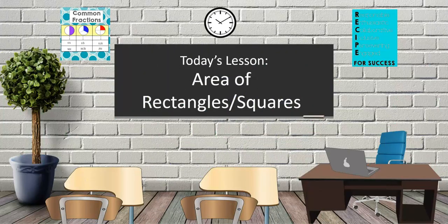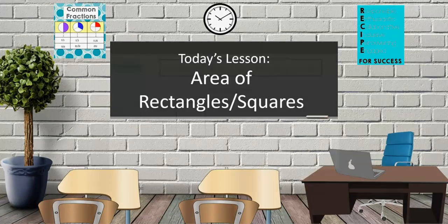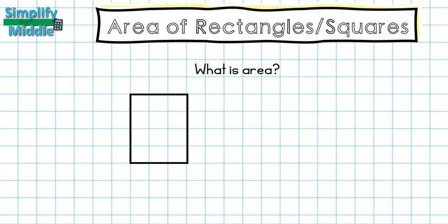Hi and welcome to today's lesson, area of rectangles and squares. So what is area? Area is just talking about the amount of space enclosed in a figure. Here we have length and width which are going to enclose our figure for this rectangle. So the pink here is going to represent the area.